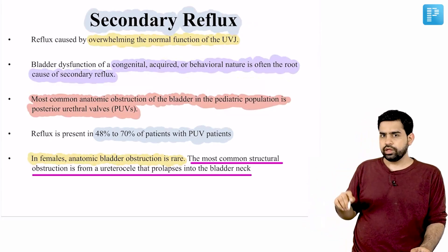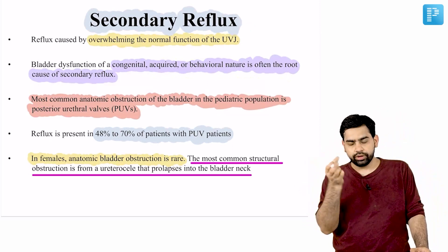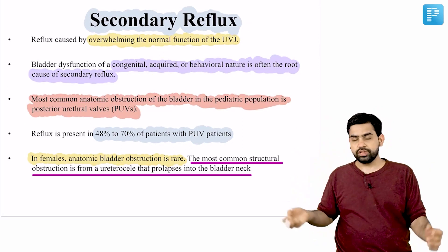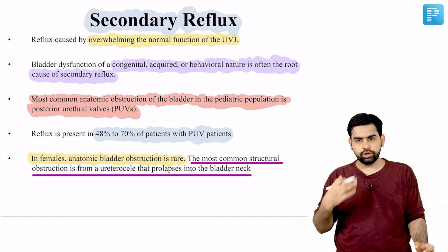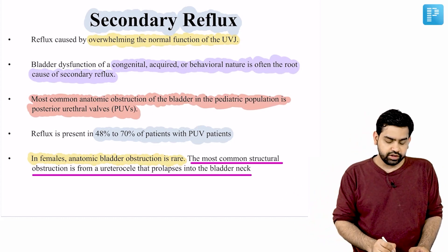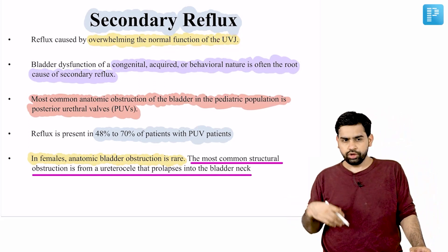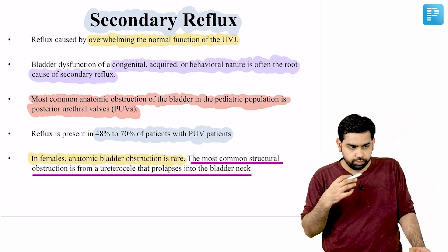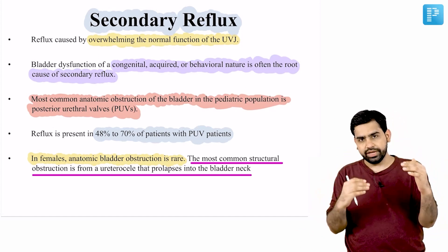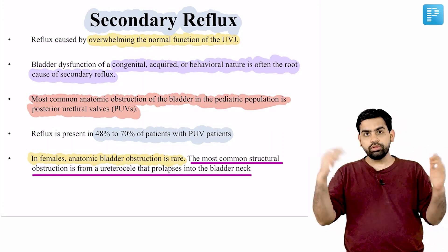Now, what about secondary reflux? Here the problem is not with the valve mechanism or the intramural length of the ureter. There is some kind of distal obstruction, or the bladder is having abnormal contractions, which is leading to the reflux. Reflux is caused by overwhelming the normal function of the ureterovesical junction. It can prevent reflux only up to a certain point — if pushed too hard, that limit can be crossed and reflux occurs.